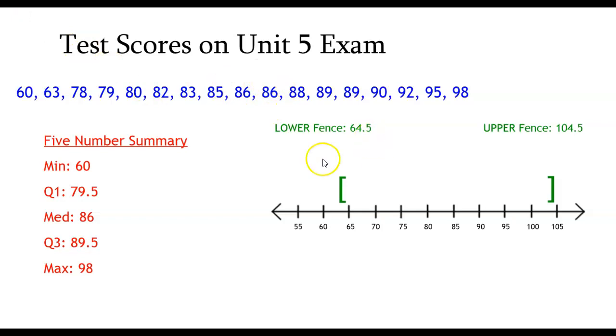Now that I'm looking at my lower fence, I notice that there are a couple of values that are below the lower fence, namely 60 and 63. Both of these values are below that lower fence, which means they are outliers. They are called low outliers. There's no values that are above 104.5, which makes sense because these are test scores. So 98 is going to be within my upper fence. So there are no higher outliers, but there are two lower outliers.